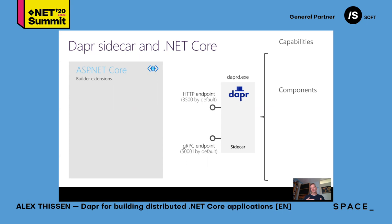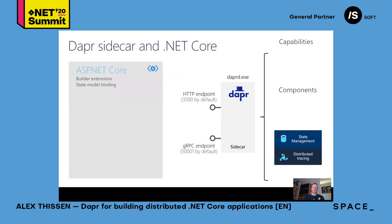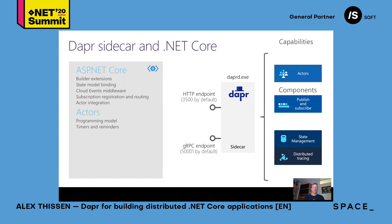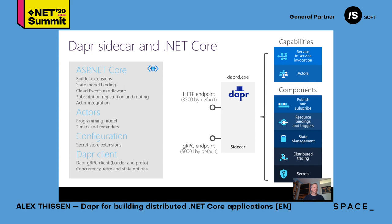As a .NET Core developer, you're accustomed to working with assemblies and NuGet packages. The .NET Core SDK for DAPR gives you builder extensions, state model binding, support for publish and subscribe, the actor model, configuration for loading secrets, and importantly a DAPR client that allows you to interact with the DAPR sidecar on a strongly typed basis.